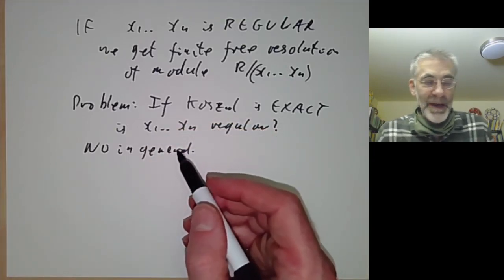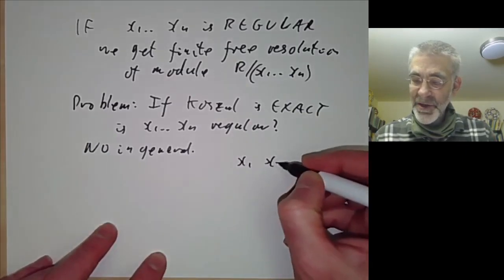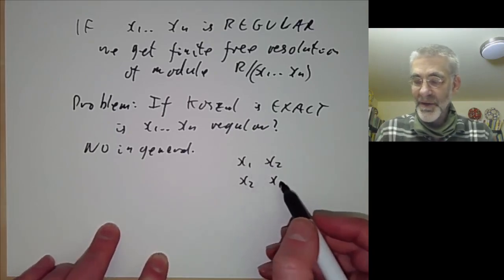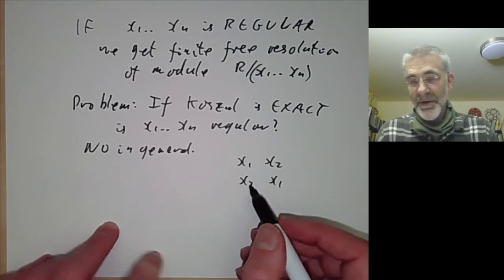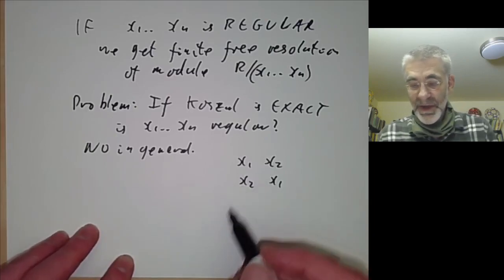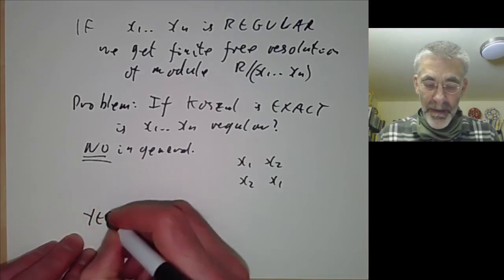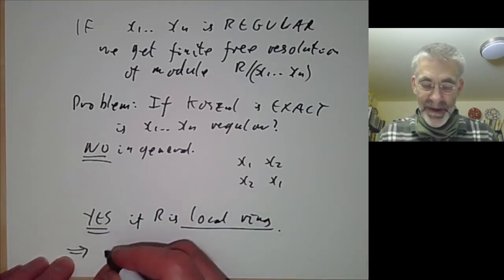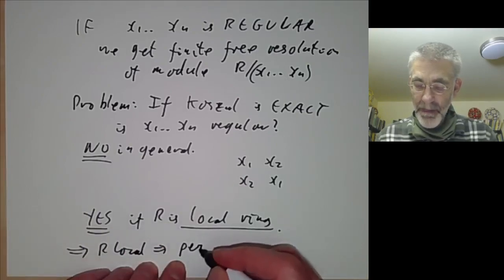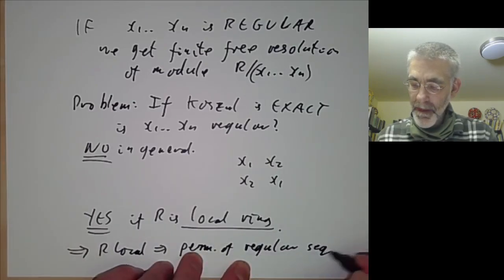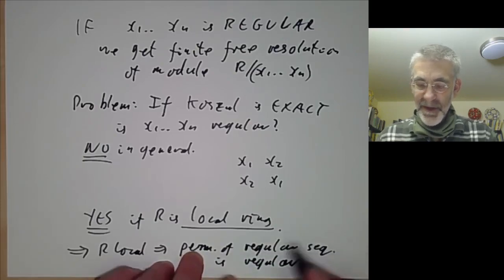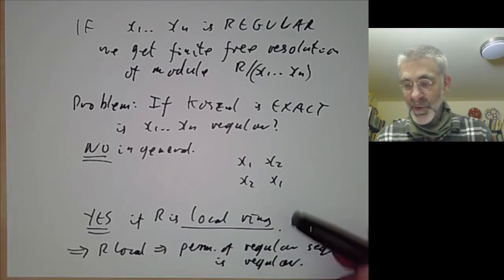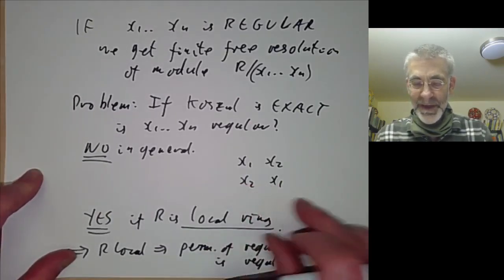The reason is the counterexample at the beginning of the lecture: if x1, x2 is regular then the Koszul complex is exact, but the isomorphic Koszul complex of x2, x1 is still exact even when x2 is a zero divisor. However, the answer is yes if R is a local ring, and a consequence is that for R local, a permutation of a regular sequence is regular.